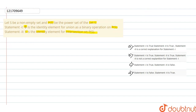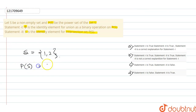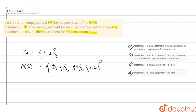Ok guys, first let's understand. We take a set S which has elements 1 and 2. Then our power set P(S) will be: the empty set ∅, {1}, {2}, and {1,2}.